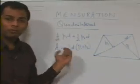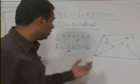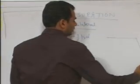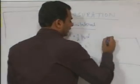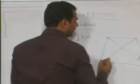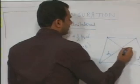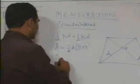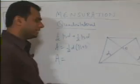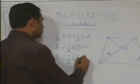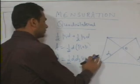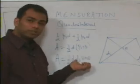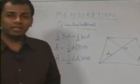The other formula for finding the area of a quadrilateral is: if the length of one diagonal is D1, the length of the other is D2, and the angle between them is theta, then the area is half D1 times D2 times sin theta. Remember, both these formulas can be applied to any four-sided figure.